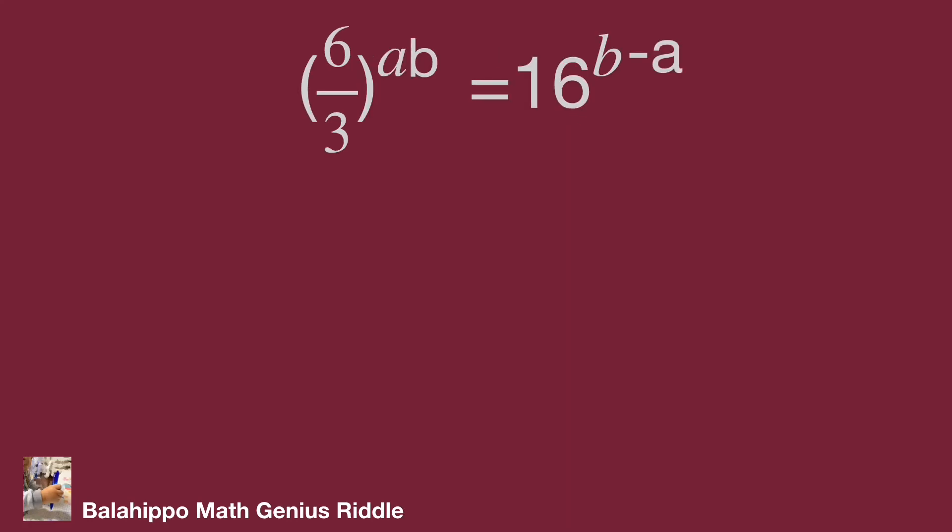Simplify this equation as 2 power of ab equal to 2 power of 4 multiplied by bracket b minus a bracket.